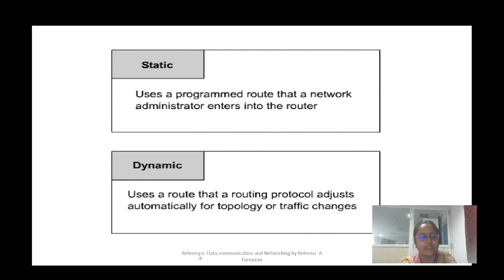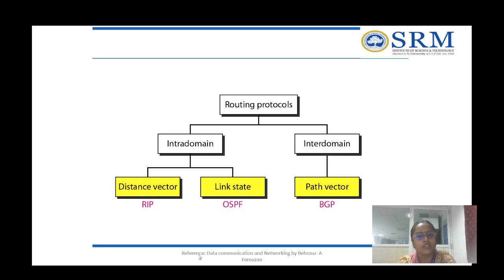To summarize, there are two types of routing: static routing, where you set the IP address and route manually, and dynamic routing, where the routing table automatically adjusts based on the protocol. Routing is also categorized as intra-domain and inter-domain. Intra-domain routing is further divided into distance vector routing (e.g., RIP), link state routing (e.g., OSPF — Open Shortest Path First), and path vector routing (e.g., BGP — Border Gateway Protocol).